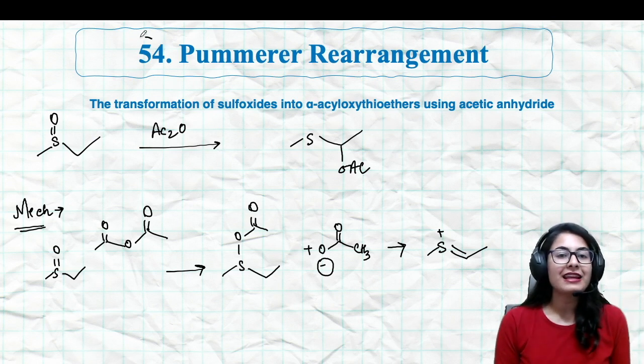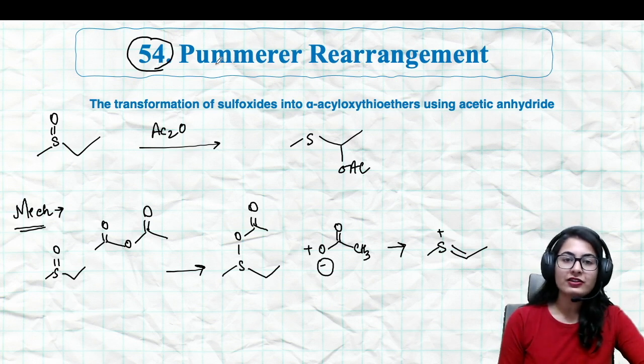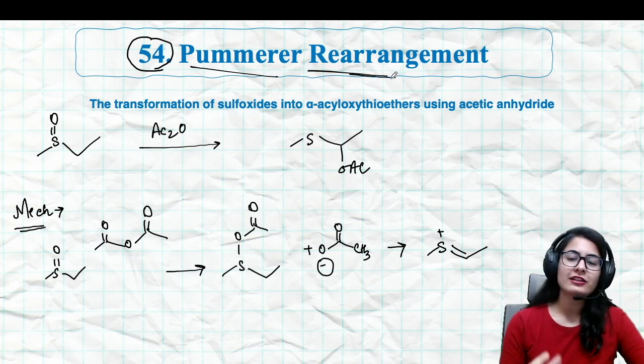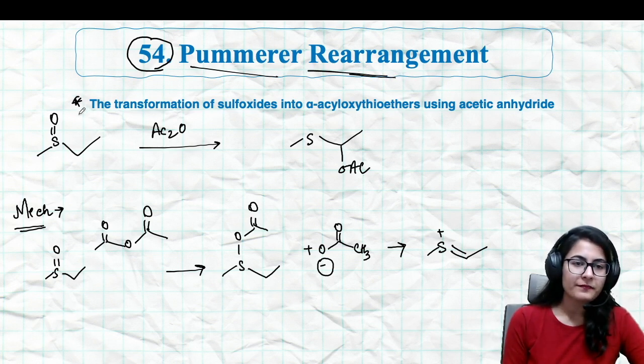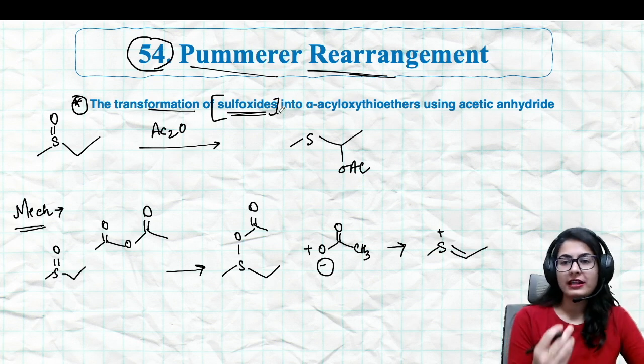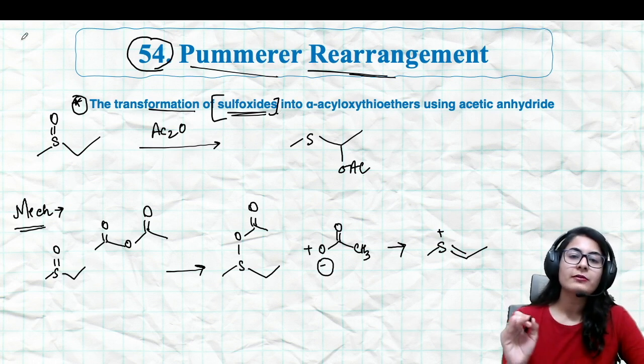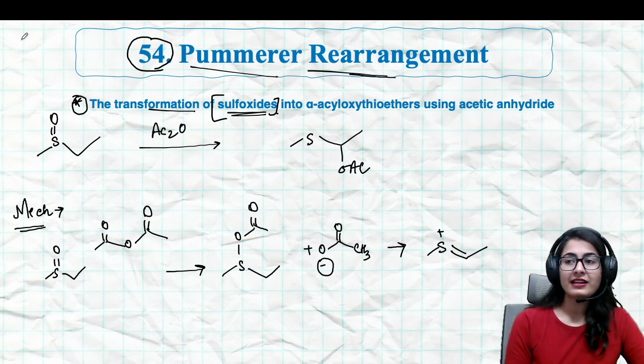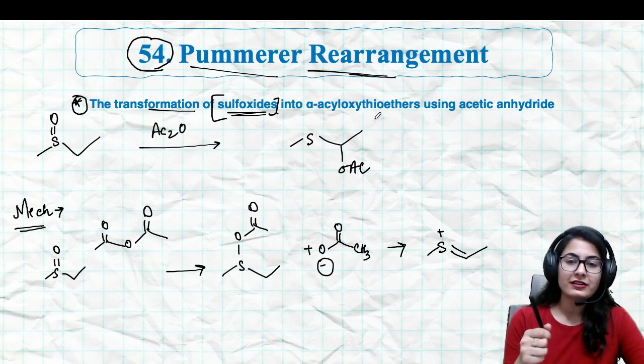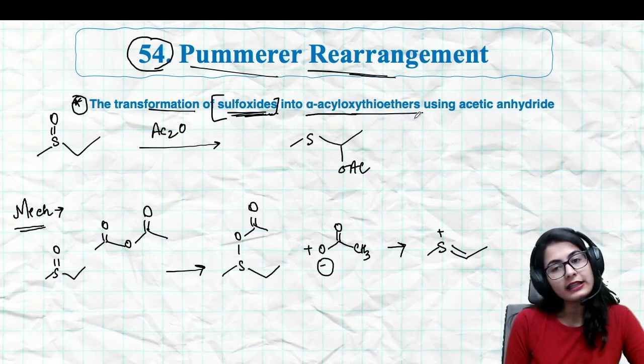Let's begin talking about this reaction. This is our name reaction 54 - we've done so many name reactions. It's a very simple reaction called Pummerer Rearrangement. It is the transformation of sulfoxides. Very recently we talked about the Clayden book, Chapter 27 about sulfur. A sulfide, sulfoxide, or sulfone - you already know. I'll put the link right here so you can visit that live session.